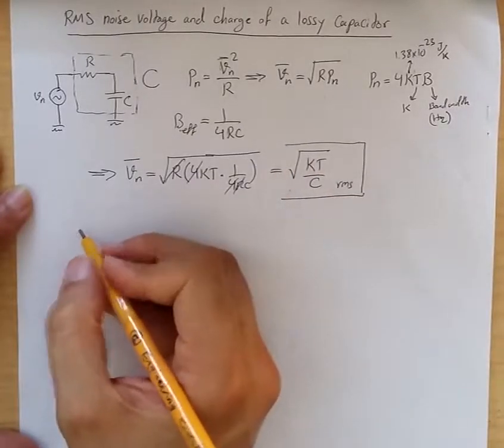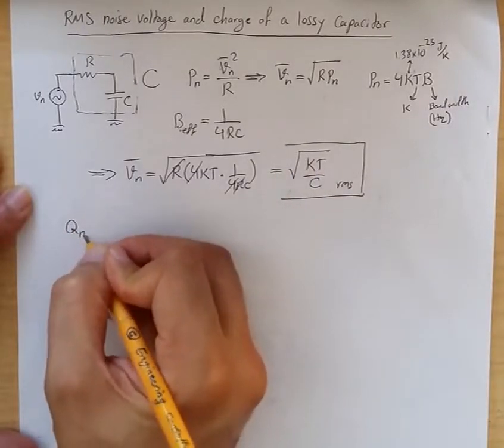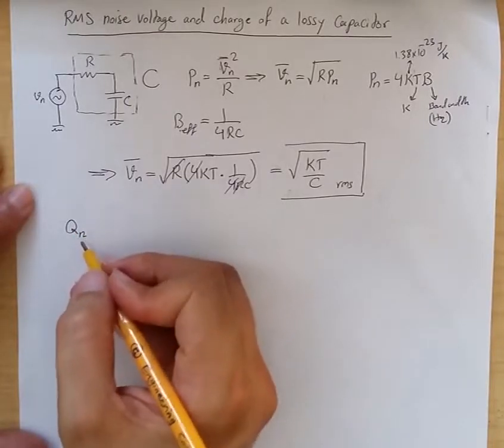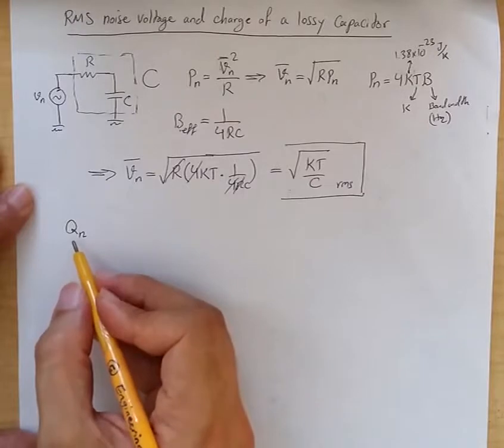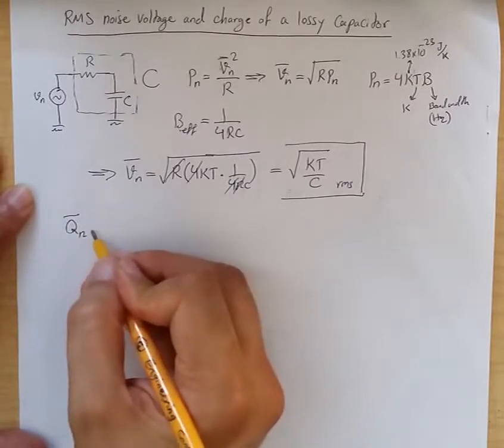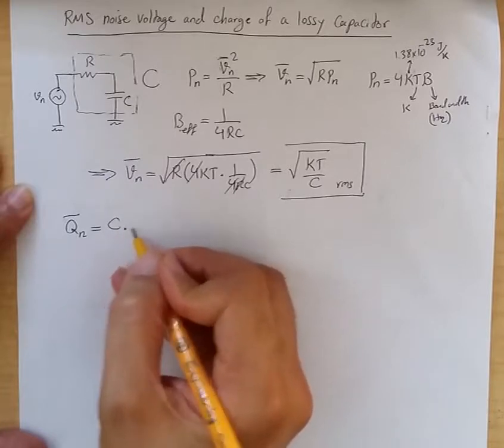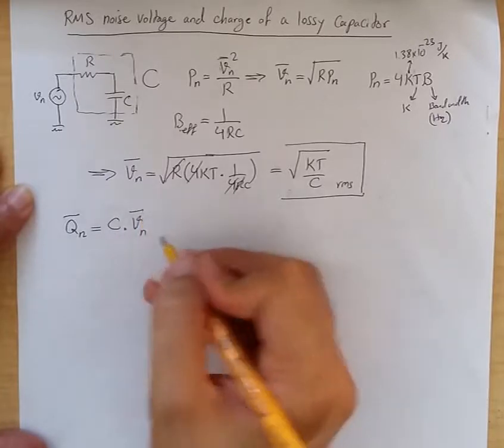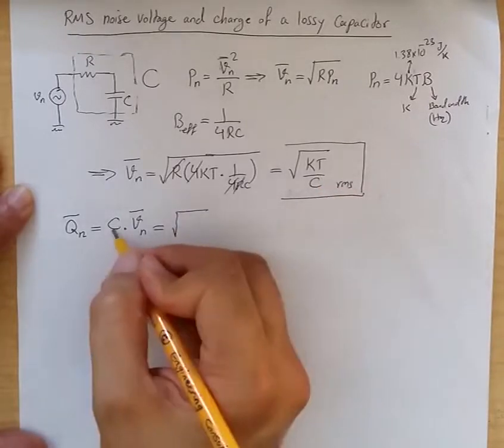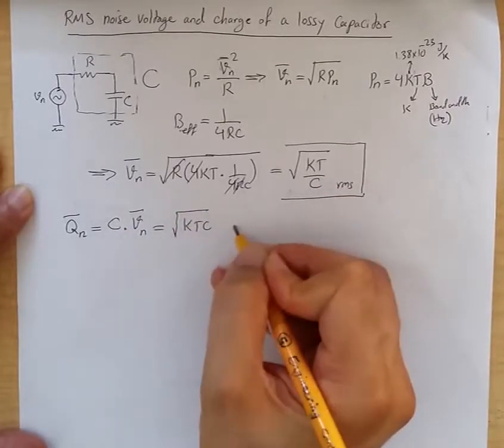Now, we can also compute the RMS value of the charge due to thermal noise across the capacitor. That would be C times V in RMS, which from here would be square root of KTC in Coulombs.